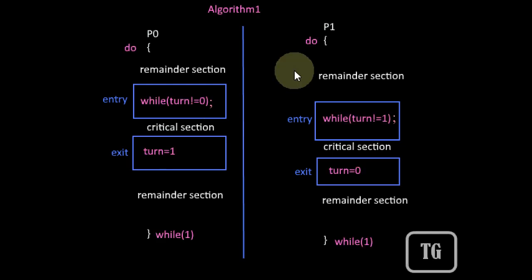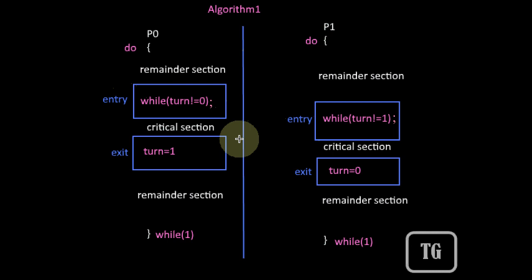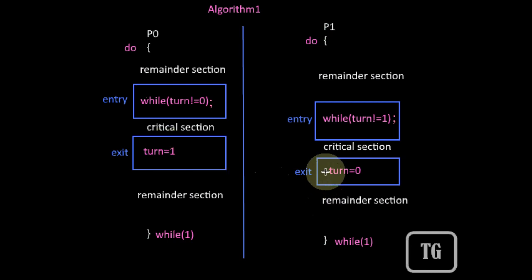This is one such algorithm designed to solve the critical section problem for two processes. The entry section code and the exit section code should ensure that the critical section problem will never occur for these two processes.